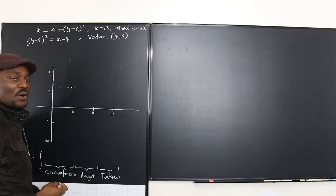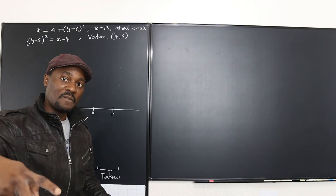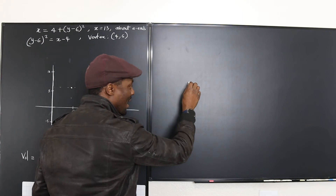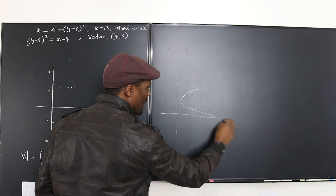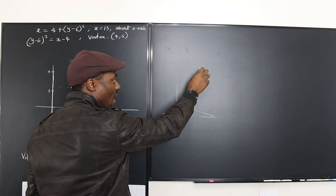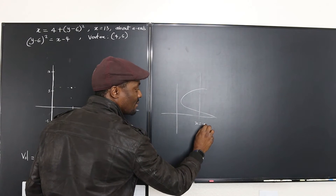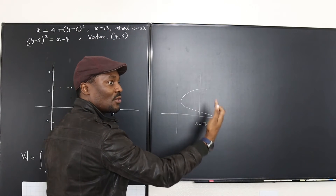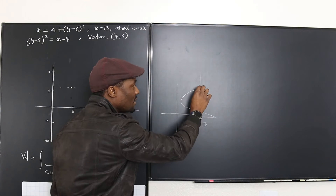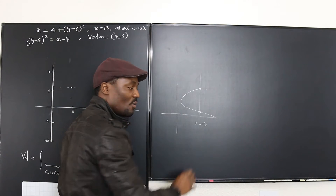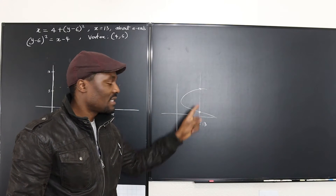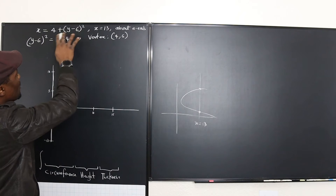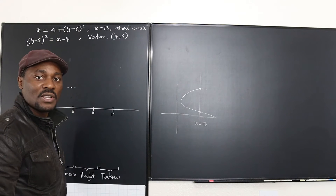So you have a curve that goes this way, and remember it's going to open to the right. You may just need to imagine a parabola opening to the right but stopped by the line x = 13. This line x = 13 is what tells you the end of the parabola.